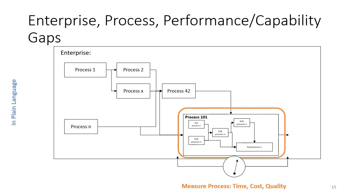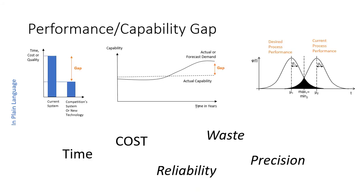There is one process in particular that we are focusing on — highlighted in orange — and we're going to study that process in detail, understand its inputs and outputs, and all the requirements and characteristics associated with it. Then we're going to instrument the process and measure time, cost, and quality. As system engineers, we're always trying to address time, cost, and quality and the relationships between them. We're going to instrument the system to measure those, establish the performance or capability, and look for opportunities to improve sub-processes.